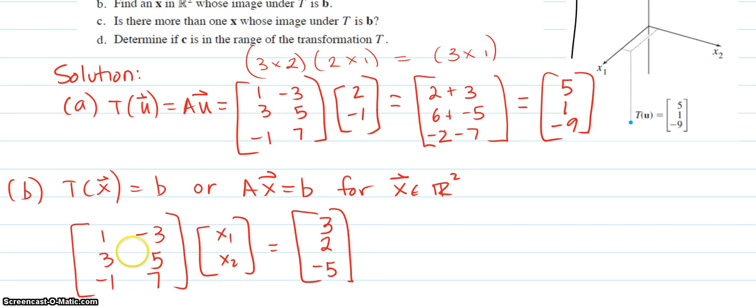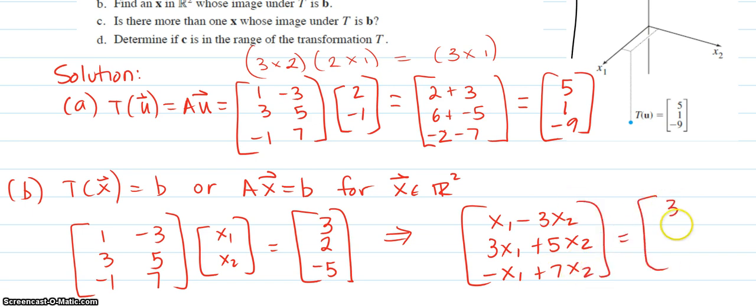Let's go ahead and multiply these together. So this would imply that we would have a 3 by 1. This is a 3 by 2, this is 2 by 1, so it's going to be a 3 by 1. The first row is going to be this times this, x1 minus this times this, 3x2. The next row is going to be this row times this column, 3x1 plus 5x2. And finally, we'll have negative x1 plus 7x2. And that better equal 3, 2, negative 5.